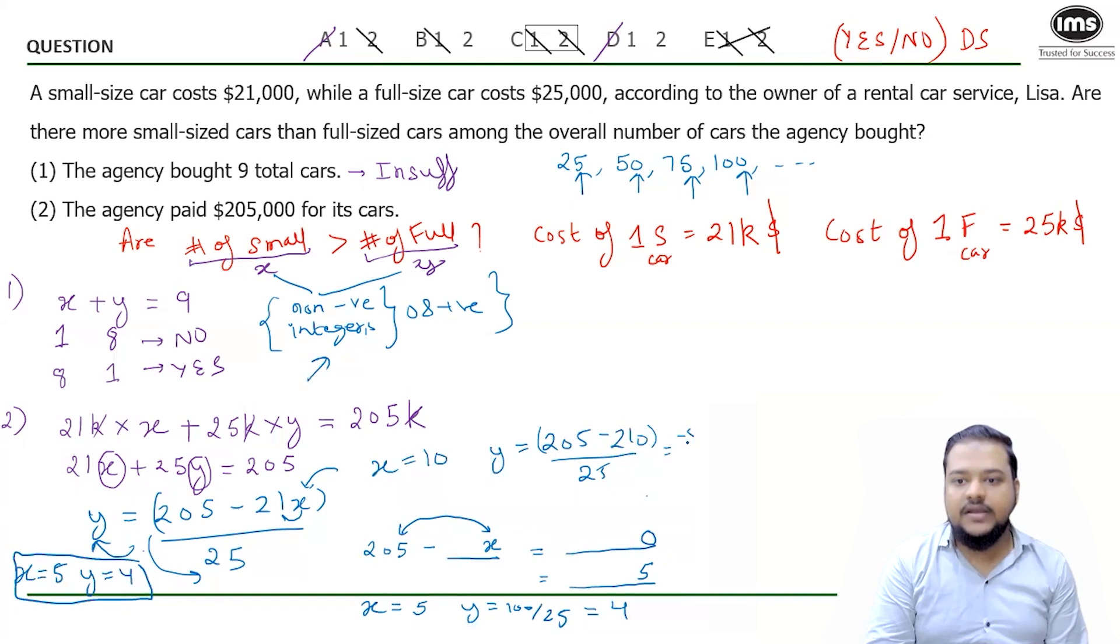Minus five upon 25. So Y cannot be negative. So this solution is also not acceptable. Although minus five is divisible by 25, we are getting negative. Negative is not acceptable.